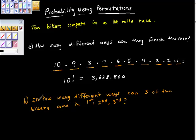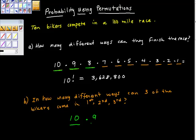Here's where it gets a little different: how many different ways can three of the riders finish — counting first, second, and third place? How many riders could come in first? Ten. Once one does, nine are left, so nine could finish second. Once first and second are taken, eight riders remain, so it's ten times nine times eight. Using the fundamental counting principle, that's 720 ways.